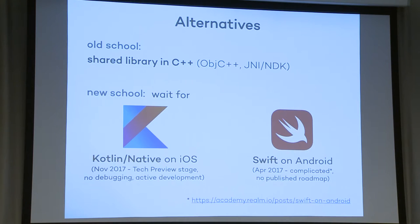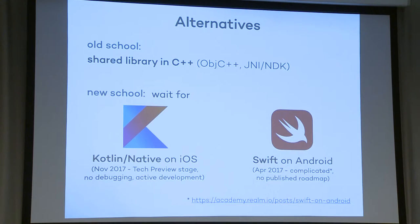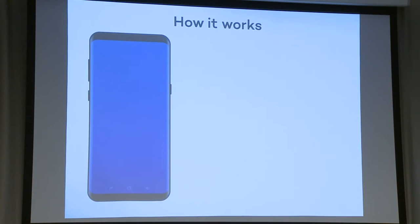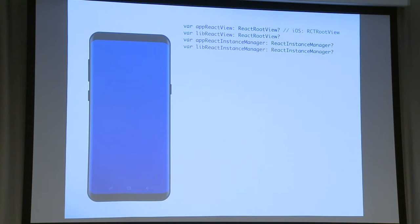Alternatives: the old school — shared library in C++. The new school — wait for Kotlin Native on iOS, which is in technical preview with no debugging, but JetBrains is doing really good work. Swift on Android — it works, but nothing is production-ready, no roadmap. This is Kotlin, which can be transpiled to Swift with some regex basically.